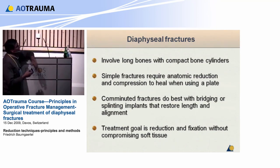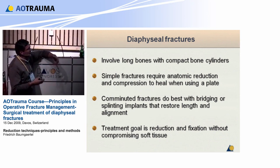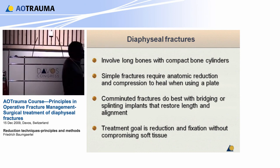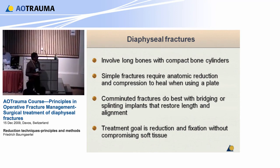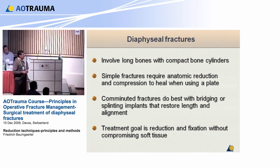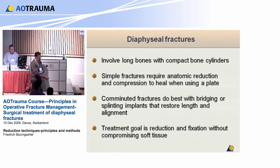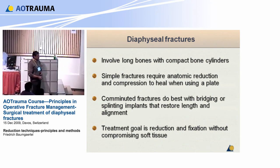As far as the definition of diaphyseal fractures, we have long bones with compact bone cylinders. It has a lot to do with the type of bone healing we will get. Simple fractures require anatomic reduction and compression to heal when using a plate — I'm talking only about simple fractures. Comminuted fractures will do best with bridging and splinting implants, with length, alignment, and rotation. The treatment goal is reduction and fixation without compromising the soft tissue.